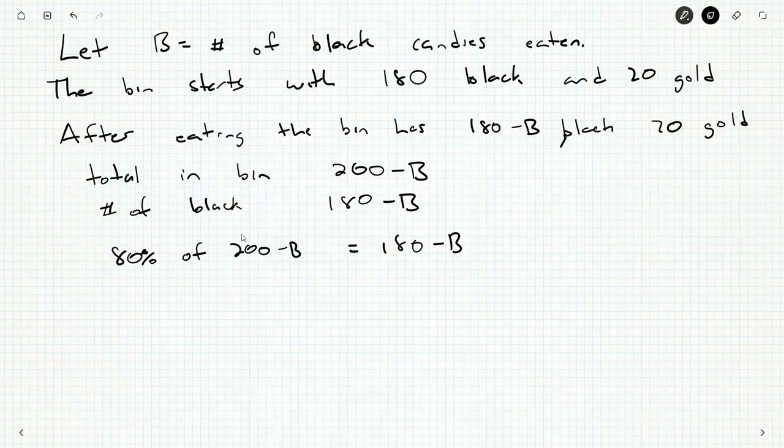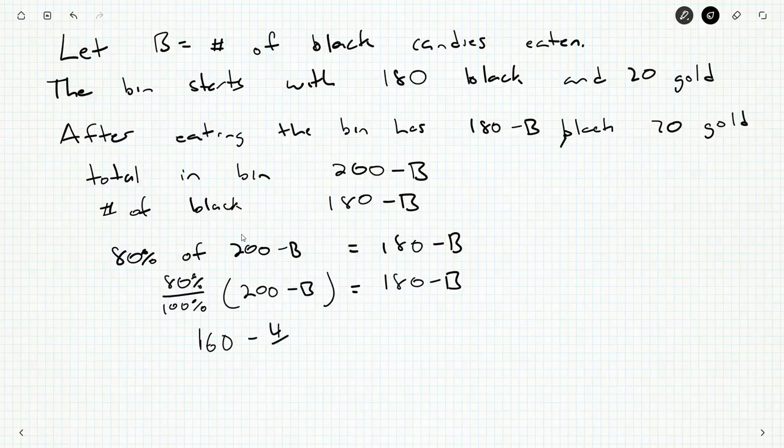If I wanted to calculate 80% of something, that's the same as setting up the fraction 80% over 100% times 200 minus B is equal to 180 minus B. Zeros will cancel, the twos will cancel. This is four fifths. So four fifths times 200 is 160 minus four fifths B.